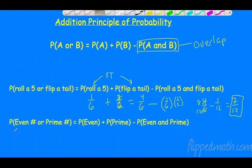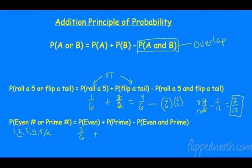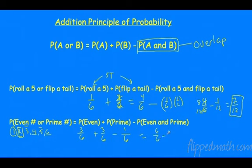What is the probability of rolling an even number or a prime number on a die? Even numbers are two, four, six — that's three out of six. Prime numbers (greater than one, only factors of one and itself) are two, three, five — also three out of six. Without subtracting the overlap we'd be at 100%, which can't be right. The overlap — numbers that are both even and prime — is just two. So subtract one sixth: six sixths minus one sixth equals five sixths.